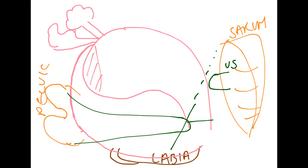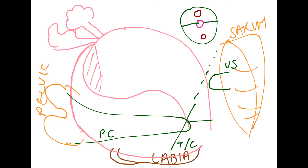So this is the uterosacral, pubocervical, and this would be a transverse or cardinal ligament. If I were to draw this like you're viewing from the top, the uterus will be here, the bladder will be at the front and the rectum will be behind. The uterus attaches to the lateral wall of the pelvic girdle — that's our cardinal or transverse ligament. The uterus attaches to the sacrum — that's the uterosacral ligament. And the cervix attaches to the pelvis — that's the pubocervical ligament.